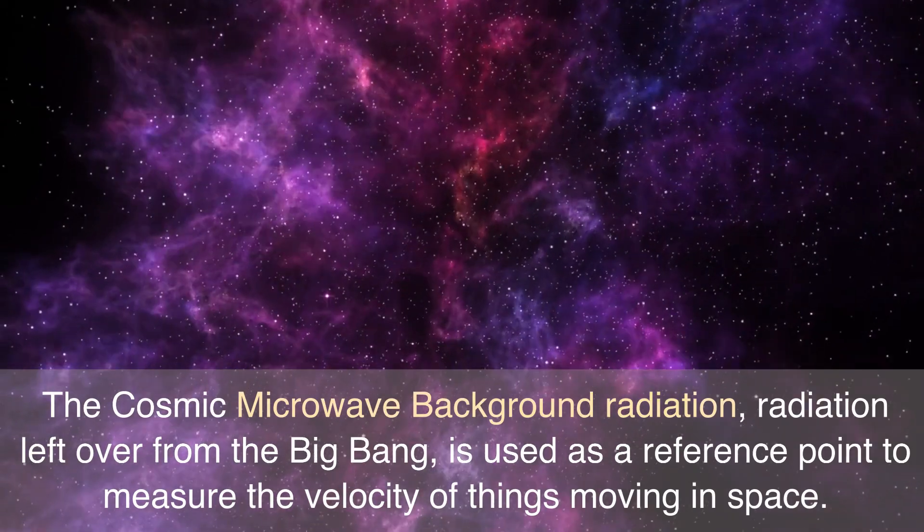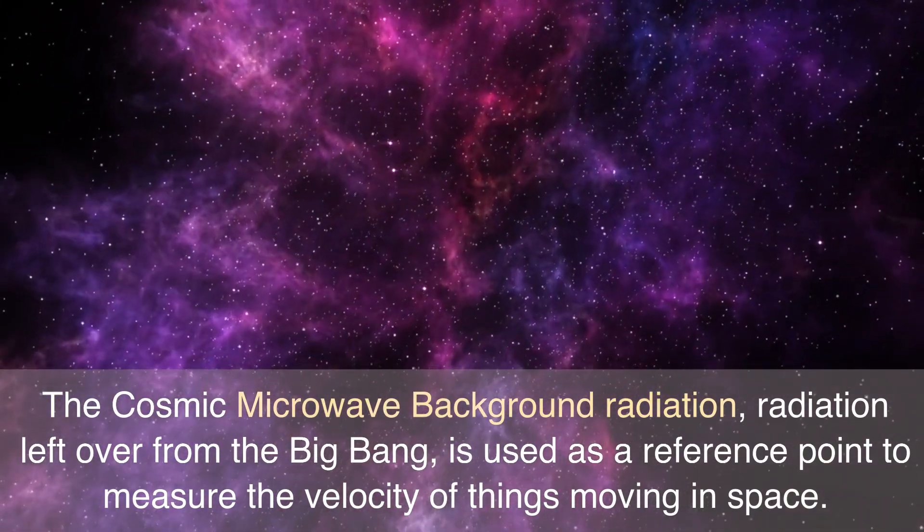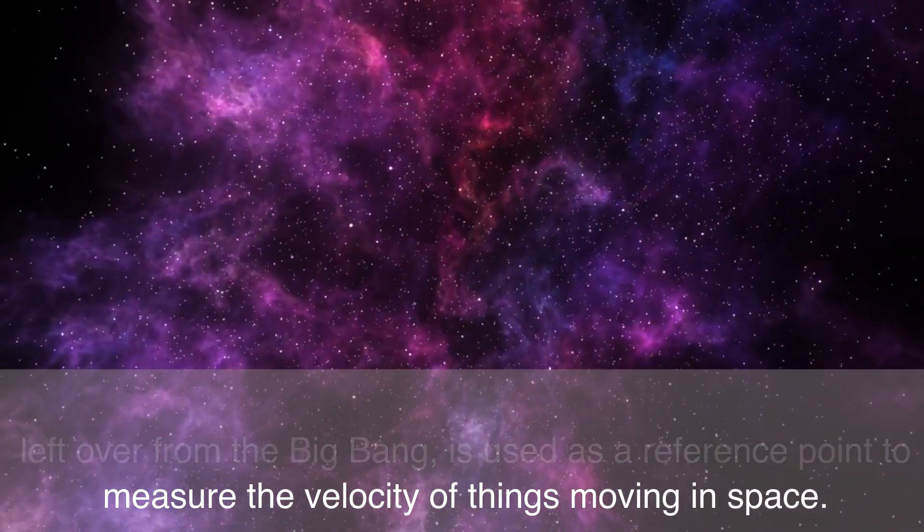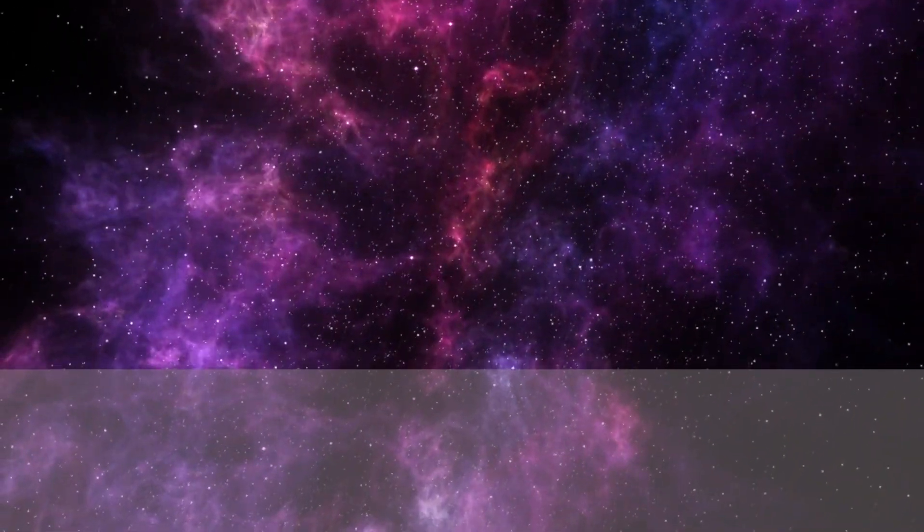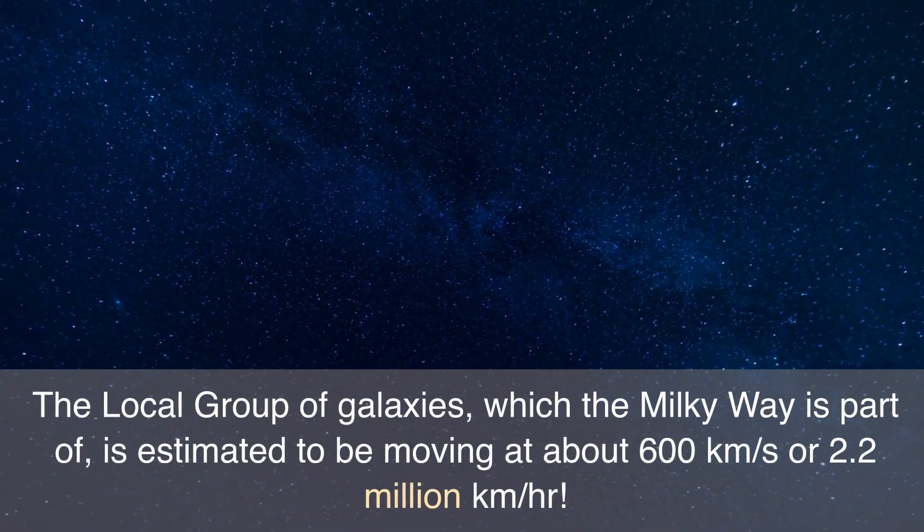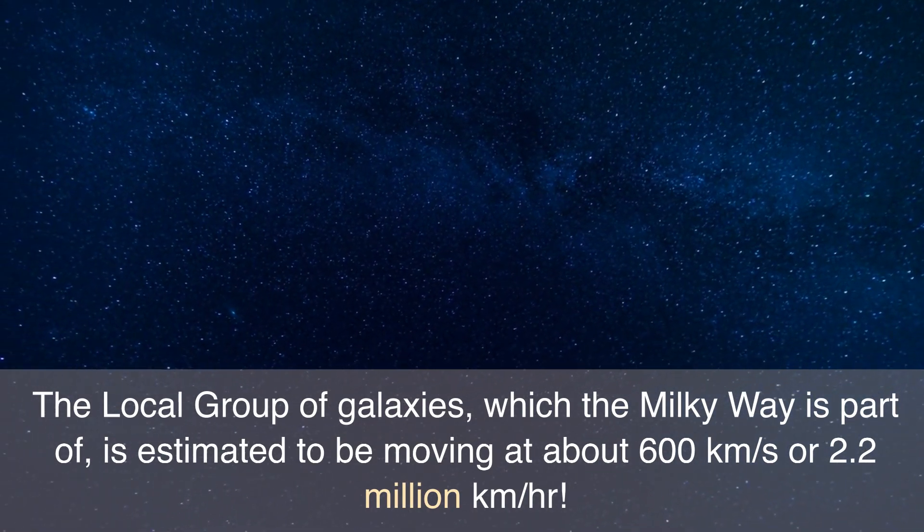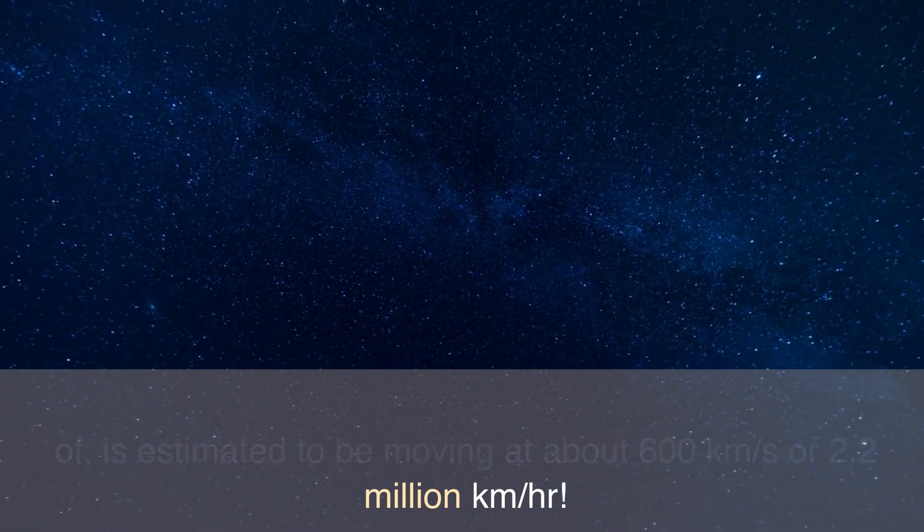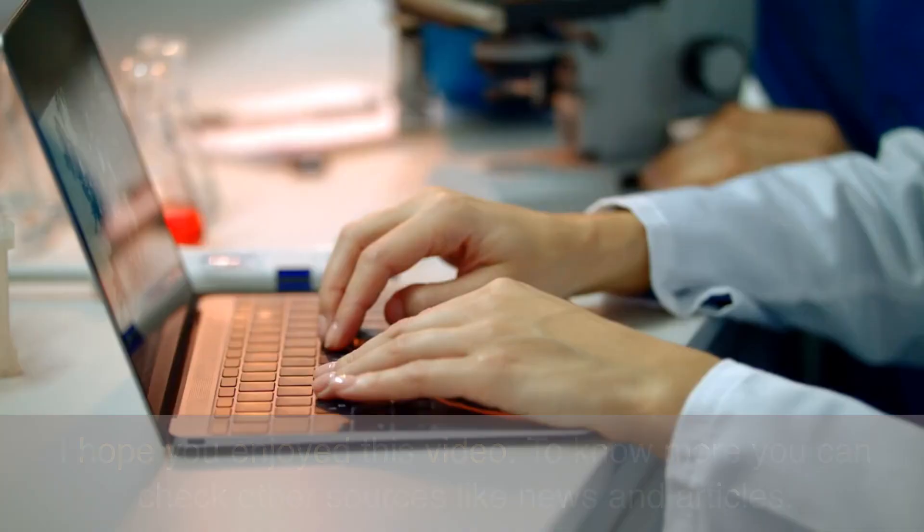The cosmic microwave background radiation, radiation left over from the Big Bang, is used as a reference point to measure the velocity of things moving in space. The local group of galaxies, which the Milky Way is part of, is estimated to be moving at about 600 kilometers per second or 2.2 million kilometers per hour.